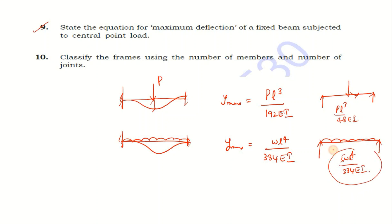Simply supported deflection formula is PL³ by 48EI, and WL⁴ by 384EI. For fixed beam, the formula is 1/4 of the simply supported formula. Maximum deflection with central point or UDL.